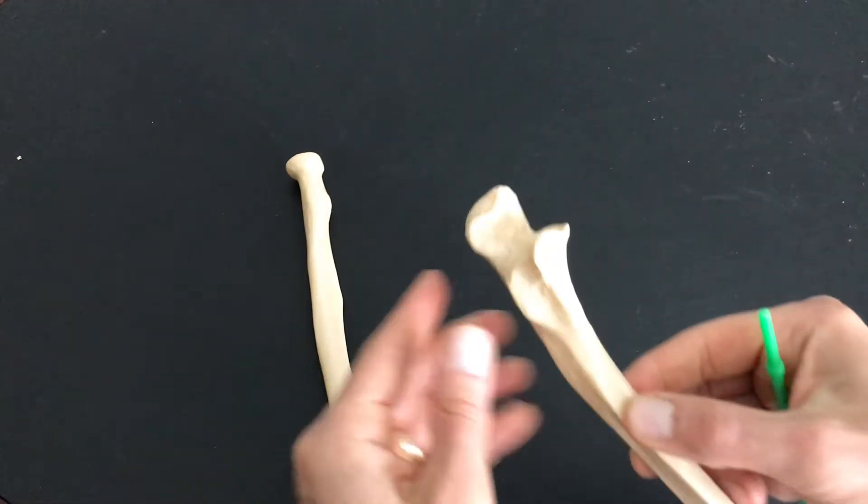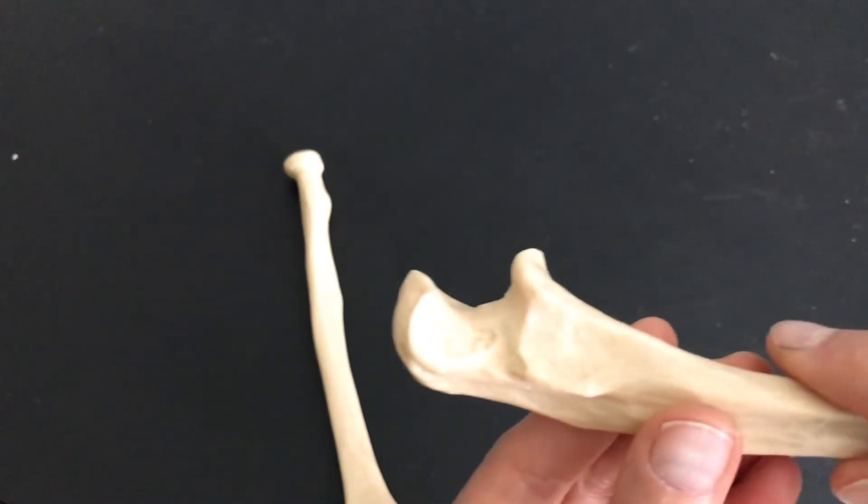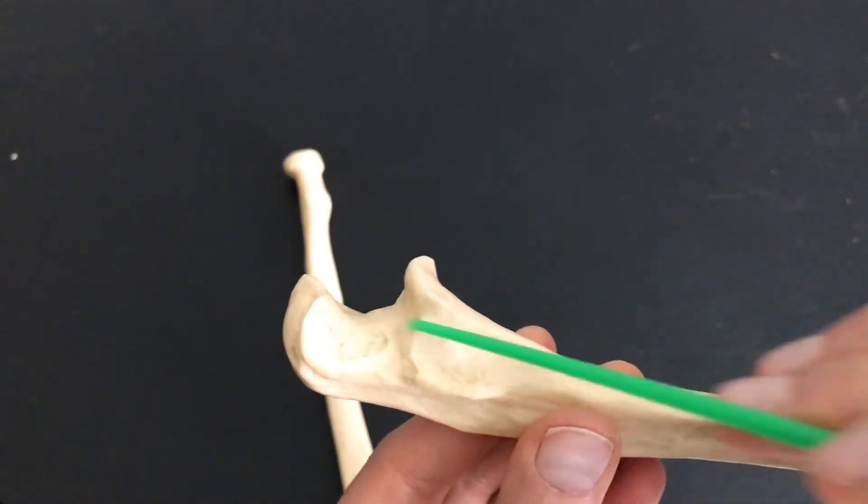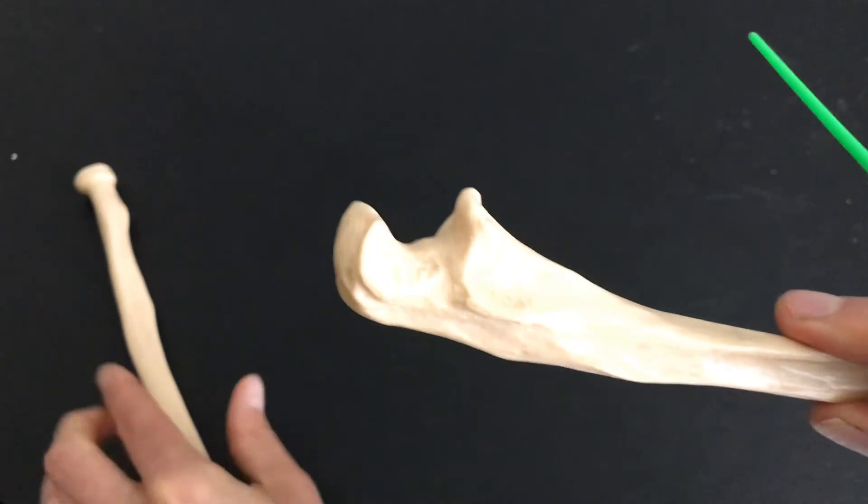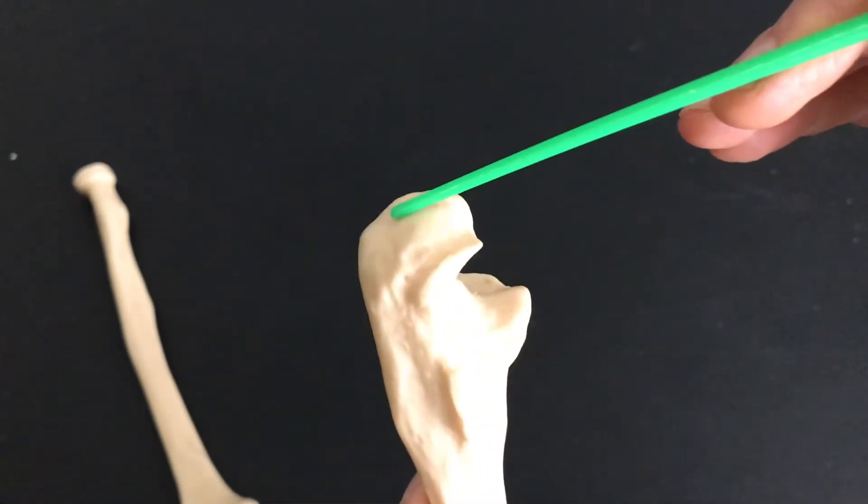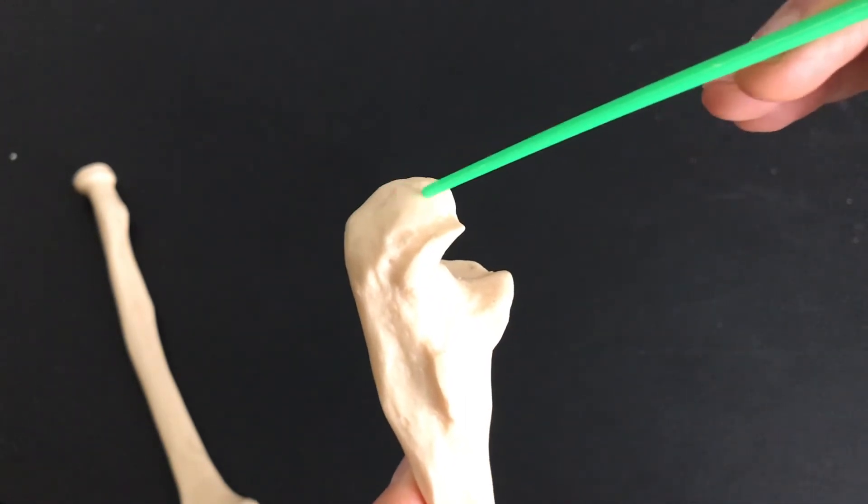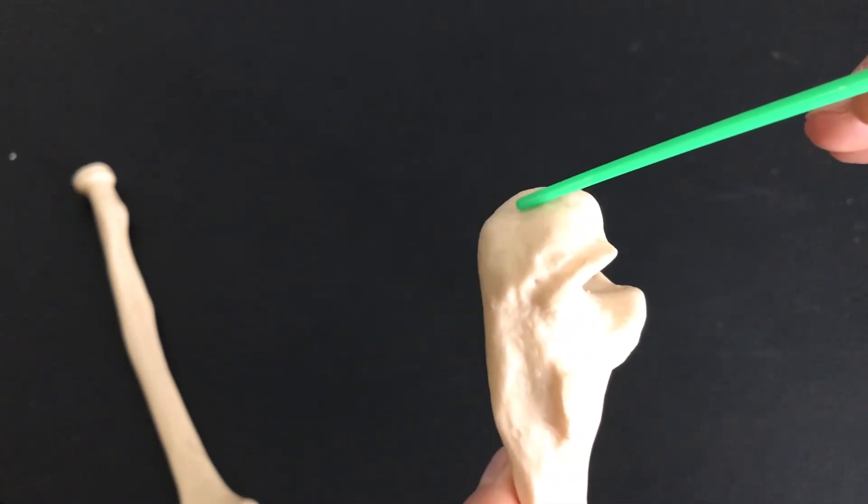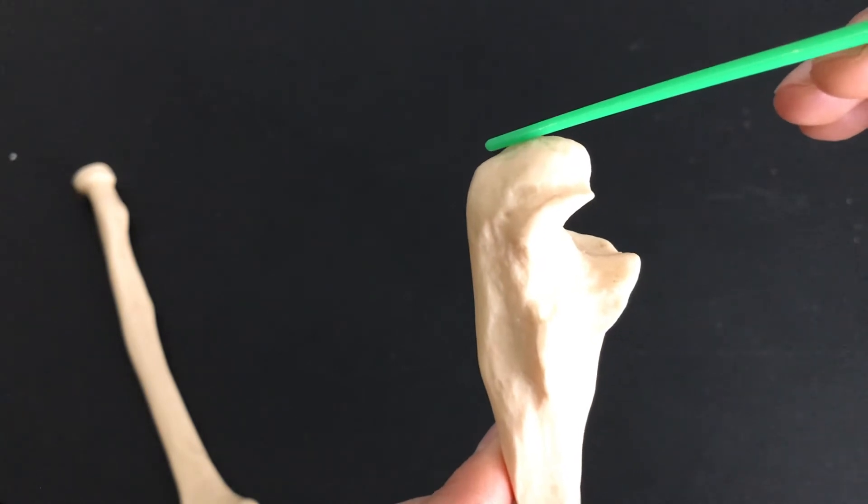If we look at the ulna, remember it has that nice U shape to it right here. The ulna has the olecranon. The olecranon is your elbow. When you rest your elbows on the table, you're resting on your olecranons.